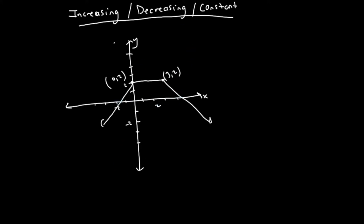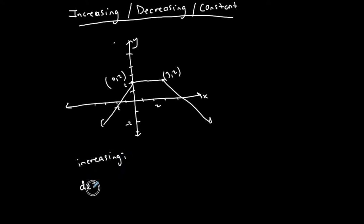You're asked to find the intervals where the function is increasing, the interval where the function is decreasing, and the intervals where the function is constant. You're going to write these intervals in interval notation, because we have an infinite number of values that go into each interval.